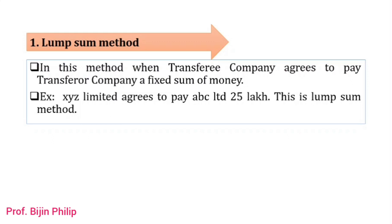For example: XYZ Limited agrees to pay BBC Limited 25 lakhs — this is the lump sum method. The purchase consideration amount is directly given, and students do not need to calculate it; it will be directly given in the problem.